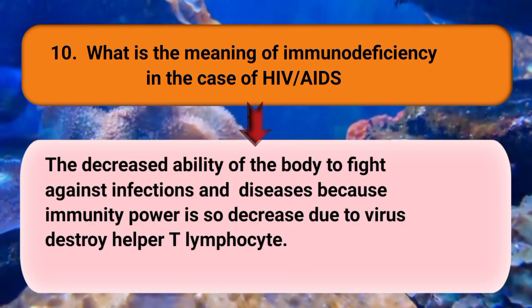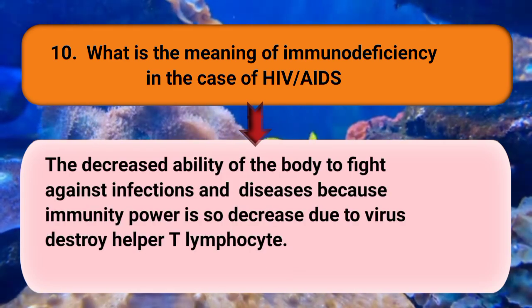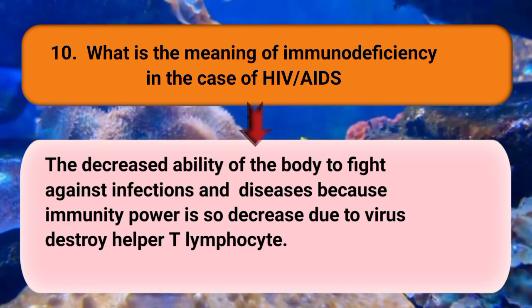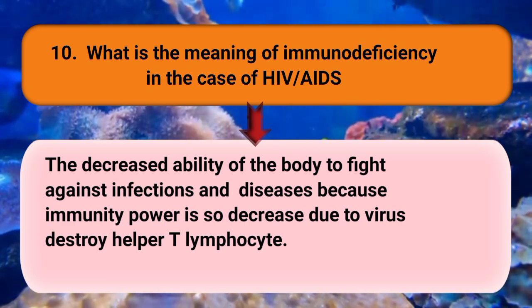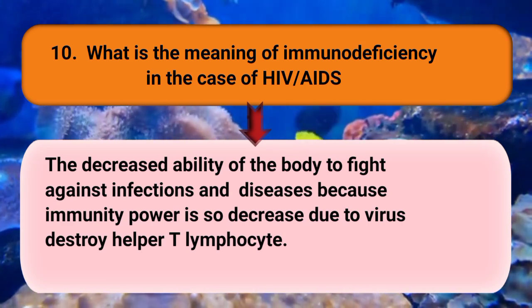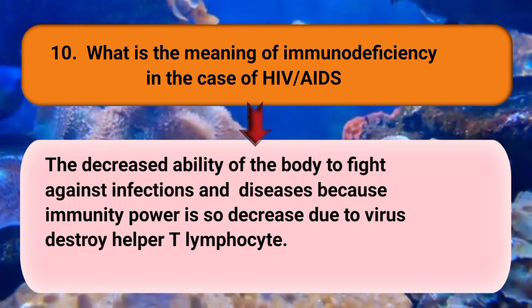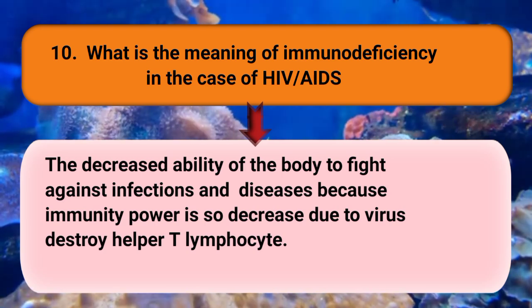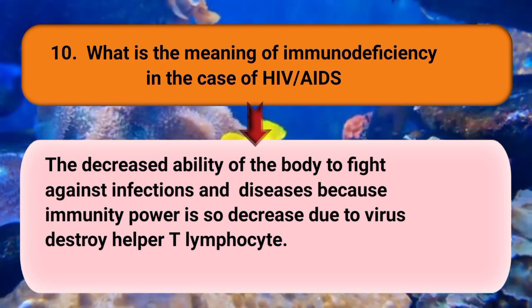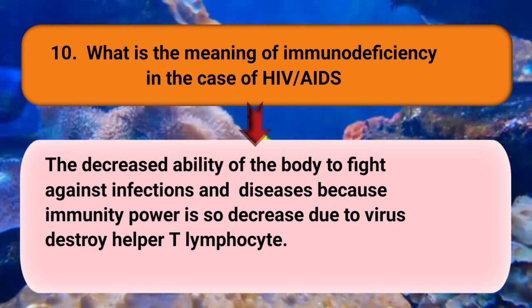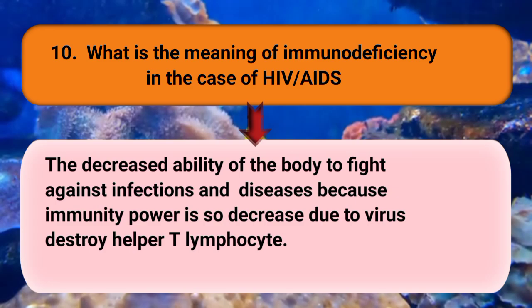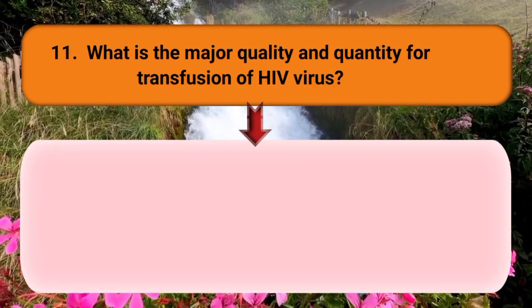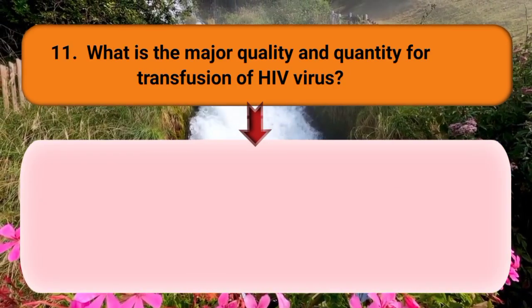What is the meaning of immunodeficiency in the case of HIV or AIDS? It refers to the decreased ability of the body to fight against infection and disease, because immunity is greatly reduced as the virus destroys helper T lymphocytes.